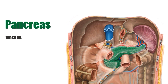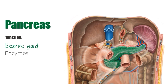As previously mentioned, the pancreas serves simultaneously as an endocrine and exocrine gland. Functioning as an exocrine gland, the pancreas secretes enzymes to the duodenum in order to break down proteins, lipids, carbohydrates, and nucleic acids during digestion.